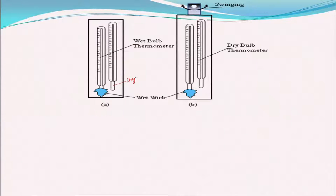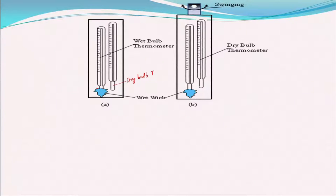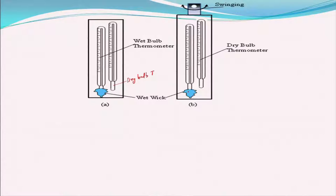In the laboratory you may have seen a sling psychrometer: one thermometer gives the dry bulb temperature, and another thermometer covered with a wet wick gives the wet bulb temperature. Because just holding it may not give the right temperature, people swing or rotate it so that air flows past the wick at sufficient velocity, causing vaporization that cools it to the wet bulb temperature.